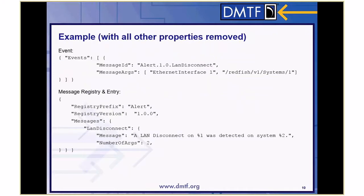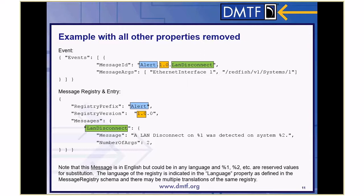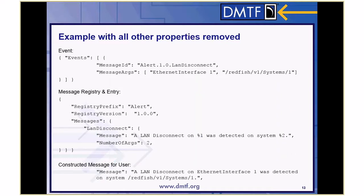Here's a worked example with all other properties removed to make it easier to follow. The first segment 'Alert' matches the message registry prefix 'Alert'. The version '1.0' in the message ID leads to finding the message registry version with 1.0. Then I look for the 'LandDisconnect' message and find it. I grab the message — 'LandDisconnect on %1 was detected on %2' — and start substituting variables. I grab 'EthernetInterface 1' from the first message arg and put it in %1, and 'redfish/v1/systems/1' and put it in %2. The final displayed message is: 'A LandDisconnect on EthernetInterface 1 was detected on system redfish/v1/systems/1.'